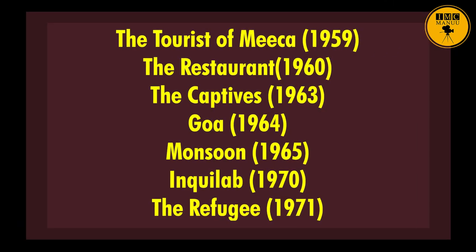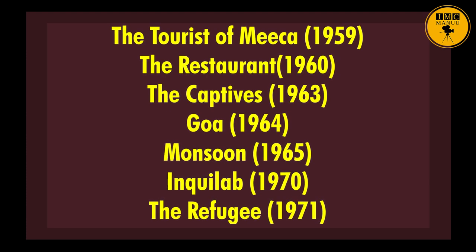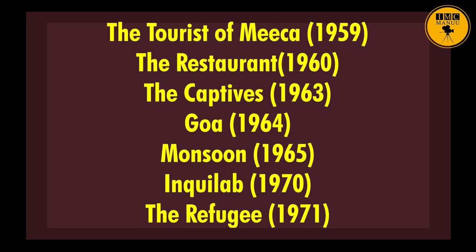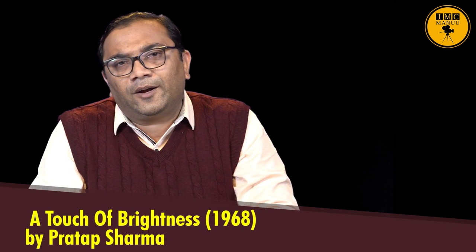Among the prolific writers of the post-independence period, we have Asif Karimboy who has written several plays which were staged, published, and anthologized in various syllabuses. Some of his important plays are The Tourist of Makkah, The Restaurant, The Captives, Goa, Monsoon, Inkhilab, and The Refugee. These plays were staged in the span of 1959 to 1971. Pratap Sharma came on the scene of Indian drama in English with his play A Touch of Brightness in the year 1968. His other important play is The Professor Has a War Cry.